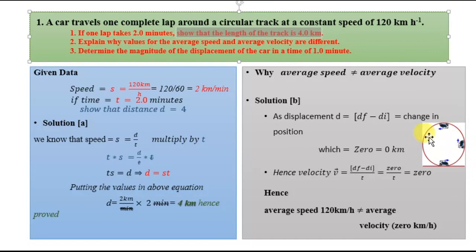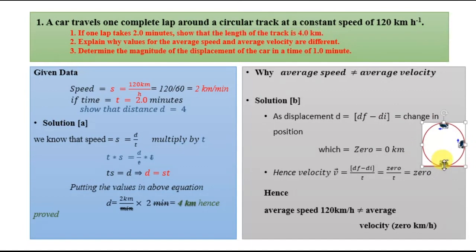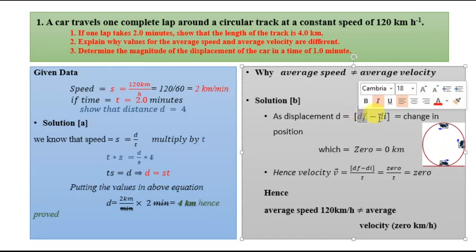Look at this picture. You can see this car traveling around a circular path. If the car starts traveling from this position and returns again to this position, then according to the rules of physics, the total displacement covered by this car will be equal to zero, because displacement is the change in position and there is no change in the position of this car.